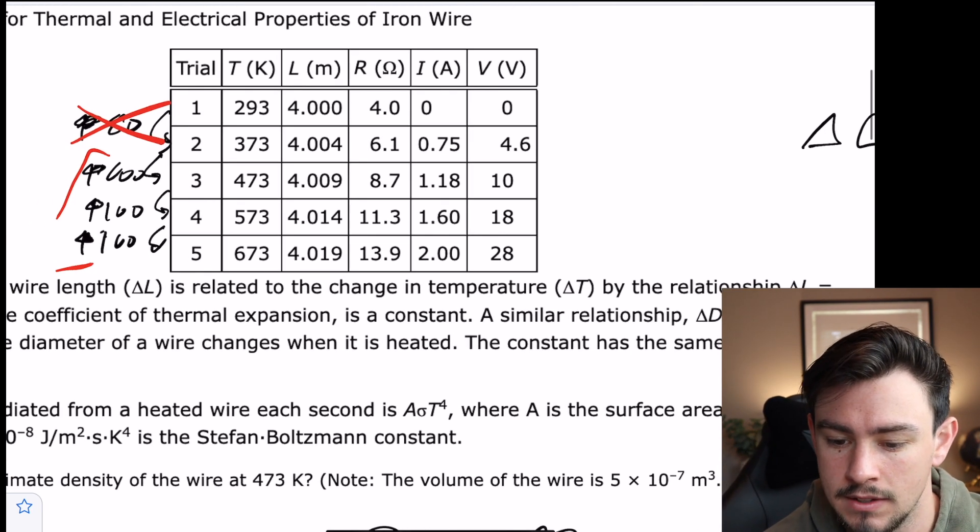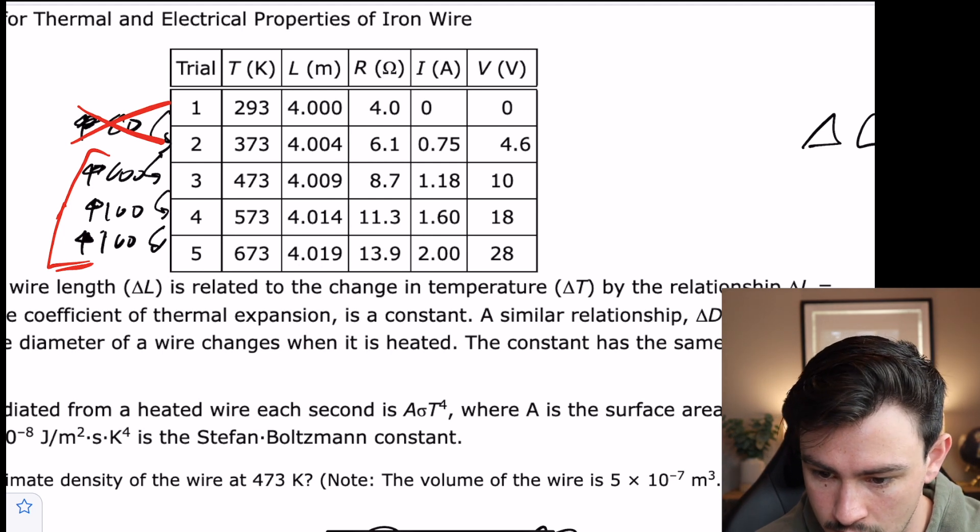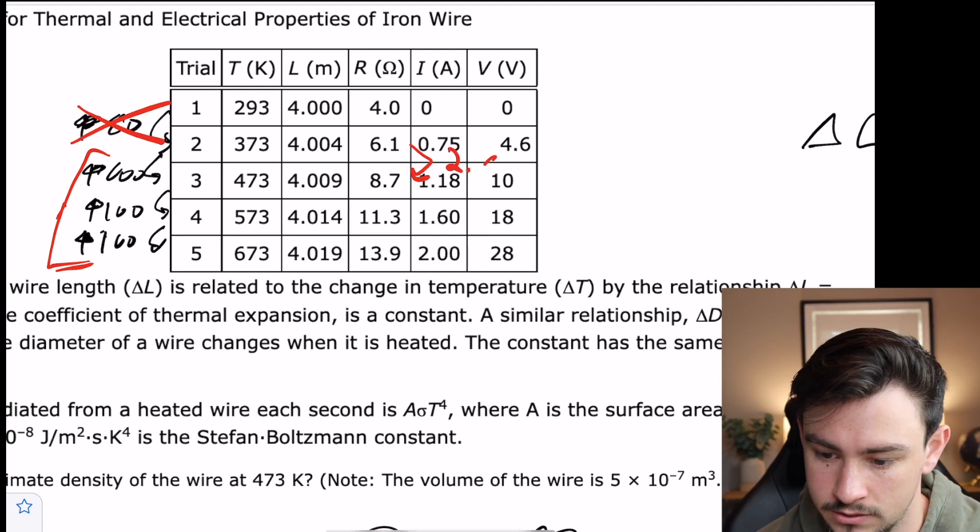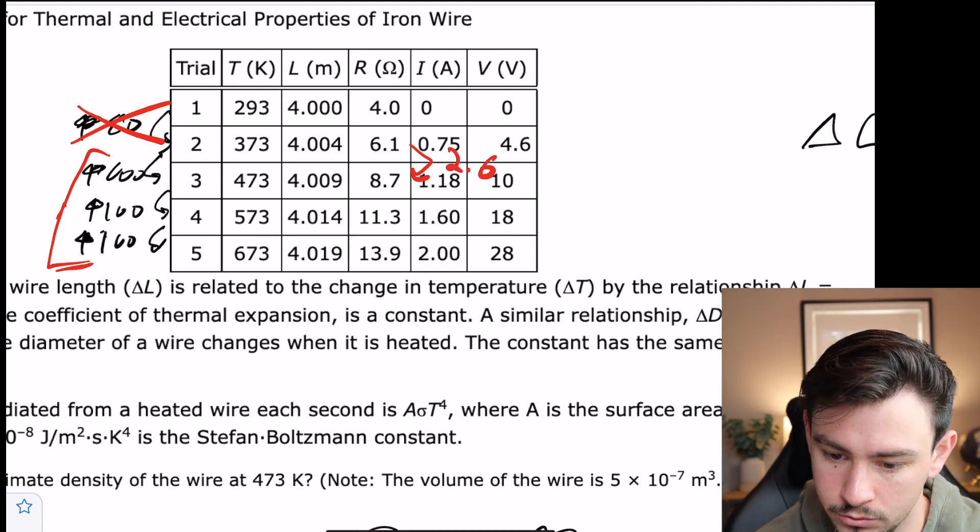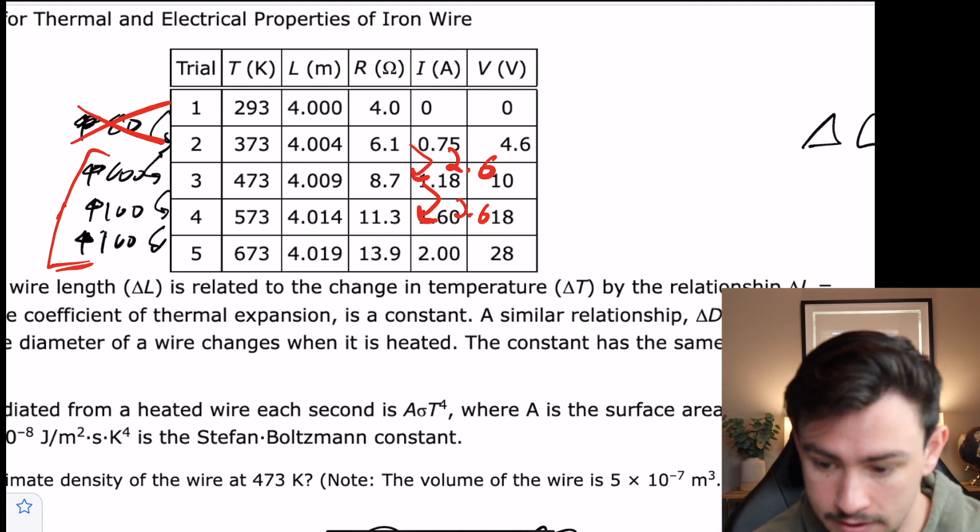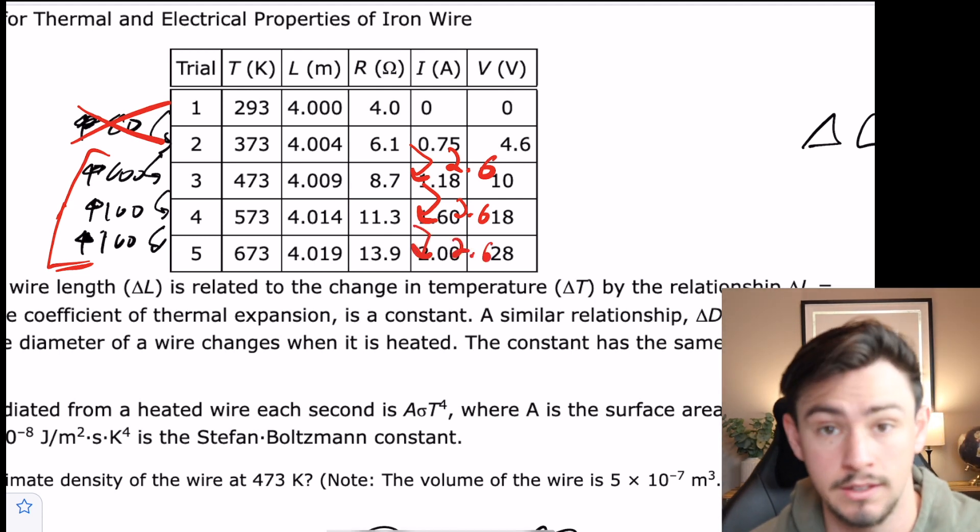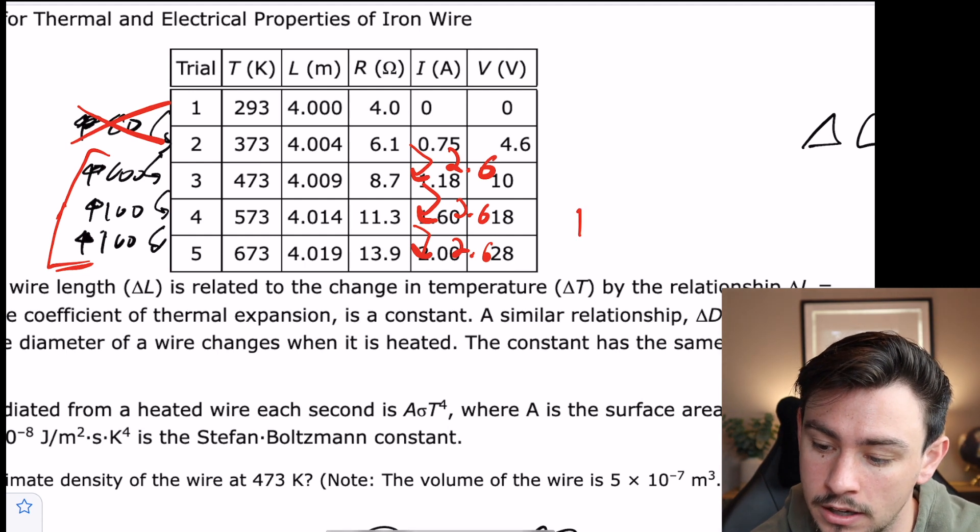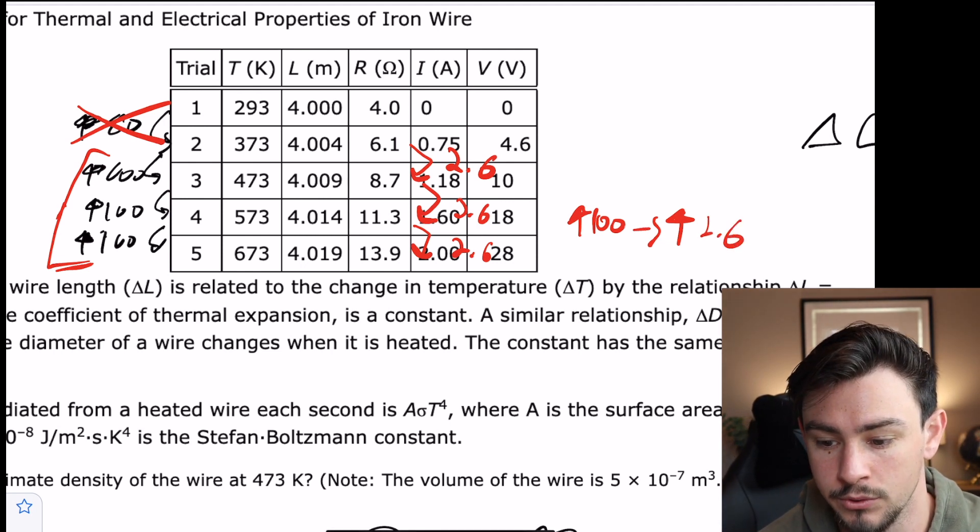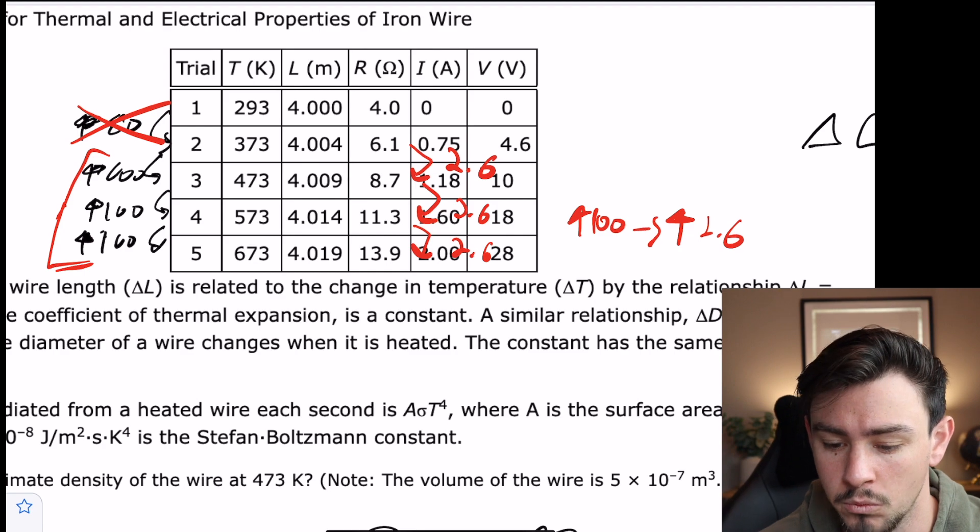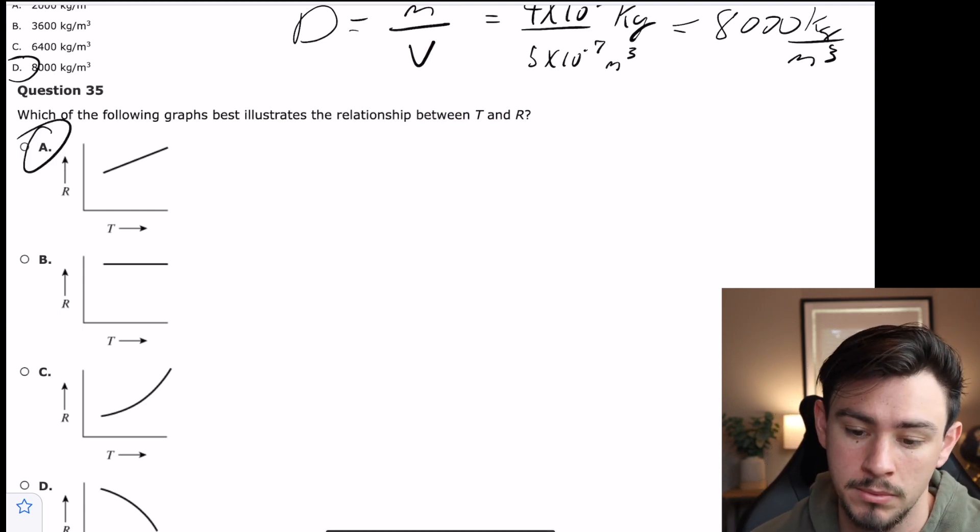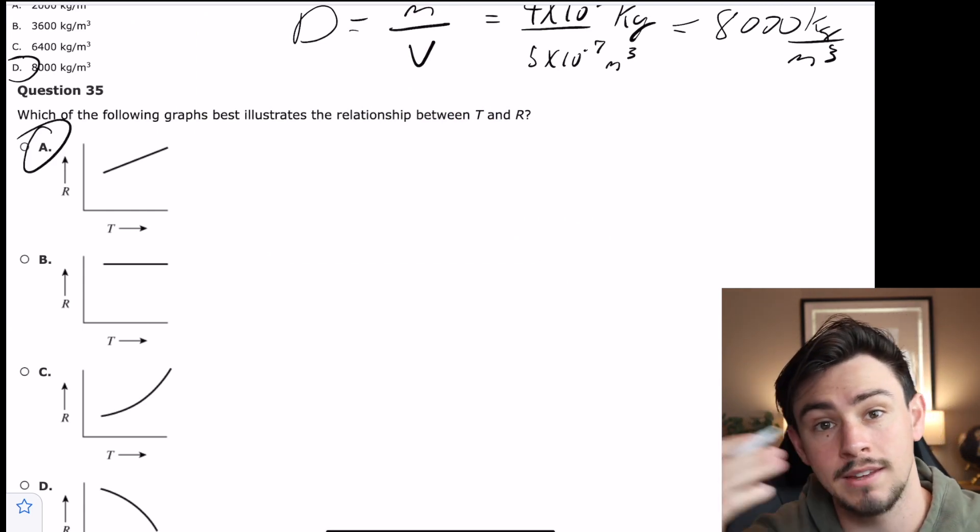So let's look at it. As we increase Kelvins, we go from trial 2 to trial 3 with an increase of 2.6, right? And then we go from trial 3 to 4 with an increase of 2.6. We on to something? Then from 4 to 5, another increase of 2.6. So it looks like as temperature goes up 100, then that leads to an increase of 2.6 with the resistance. And that's consistent time over time. And so what that actually looks like on a graph would be answer choice A, right? That's a linear relationship. As temperature goes up, so does resistance at the same rate.